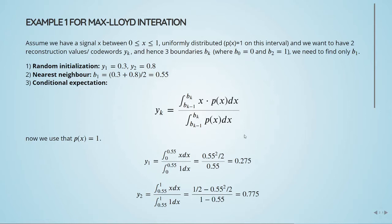We will assume that we have a signal that's between 0 and 1, that's uniformly distributed, so our p of x is equal to 1 on this interval. We want to have two reconstruction values or two codewords y of k. So we will have three boundaries b of k. We have b0 equal to 0, b2 equal to 1, and we need to find b1.